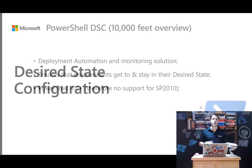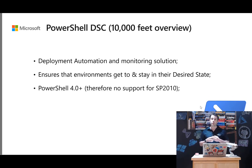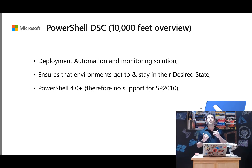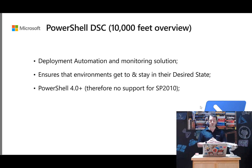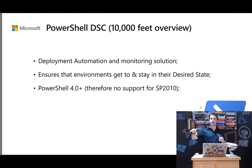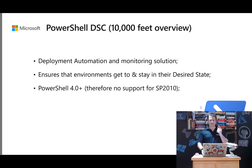Desired state configuration — PowerShell DSC — is something that was released with PowerShell 4, around the 2014–2015 timeframe. Any environment that has PowerShell 4, 5, or 5.1 can leverage this. It's a way for you to automate the deployment of your configuration — to configure an environment using automation. But it's also a tool to allow you to keep that environment in its desired state. Let's start with a quick overview of what DSC looks like.